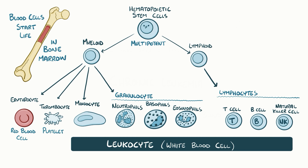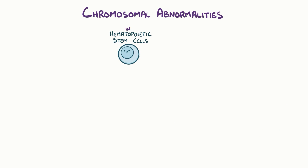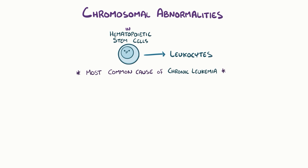Once the various blood cells form, they leave the bone marrow and travel around in the blood, or settle down in tissues and organs like the lymph nodes and spleen. A chromosomal abnormality in hematopoietic stem cells that are destined to become leukocytes is the most common cause of chronic leukemia.